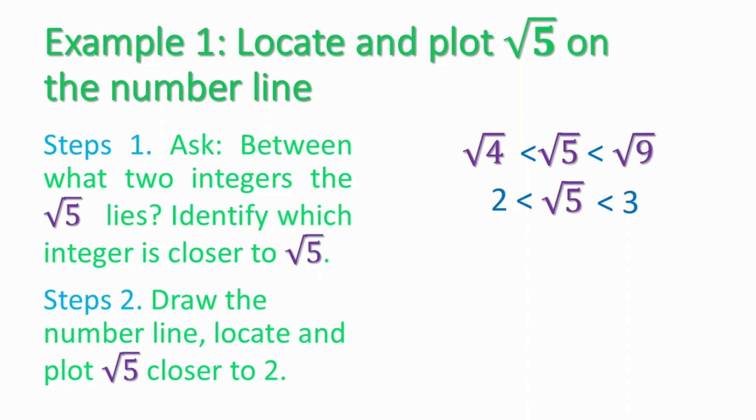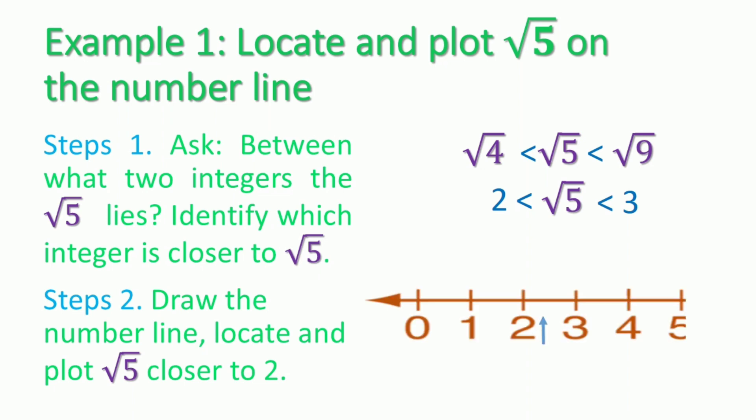Step two: draw the number line and locate and plot the square root of five closer to two. In our inequality sentence, the square root of five is very close to the square root of four, not the square root of nine. So the square root of five must be found close to the integer two on the number line. We point an arrow where we can put our point — that's the square root of five.